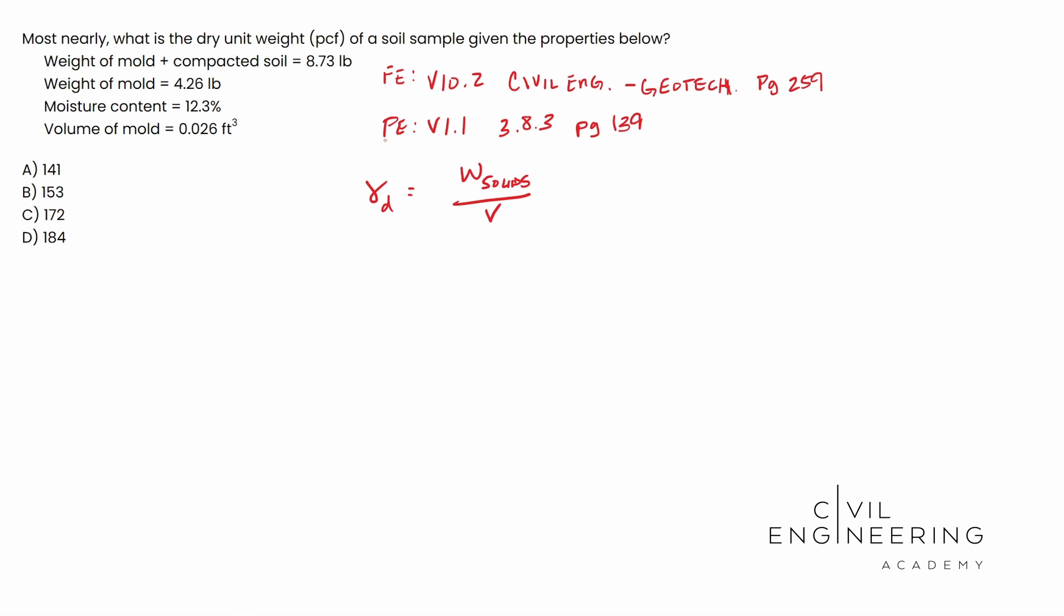Now notice what we're given and notice what we need to solve for. We're given the weight of the mold plus the soil, and we're given the weight of the mold. Using those two, we can actually solve for the weight of the soil. Notice that right here, we're given that, right here we're given that. If we subtract them, the weight of the mold plus compacted soil minus the weight of the mold, this will give us the weight of the compacted soil. So hopefully that makes sense.